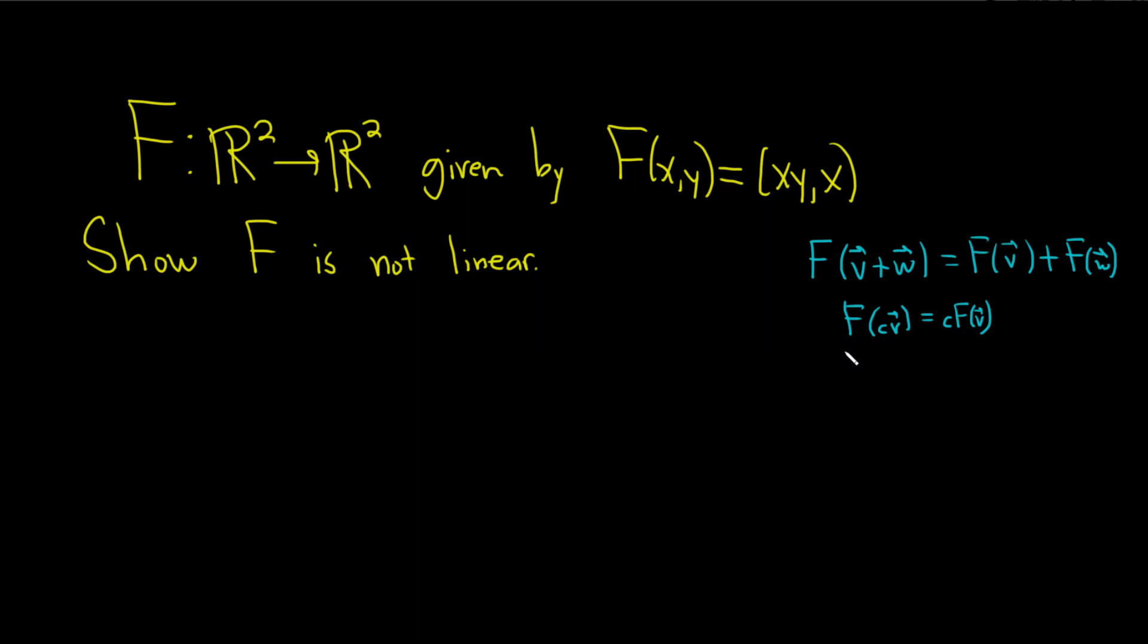So to show it's not linear, all we have to do is find an example that breaks this. So we just have to find one pair of vectors.